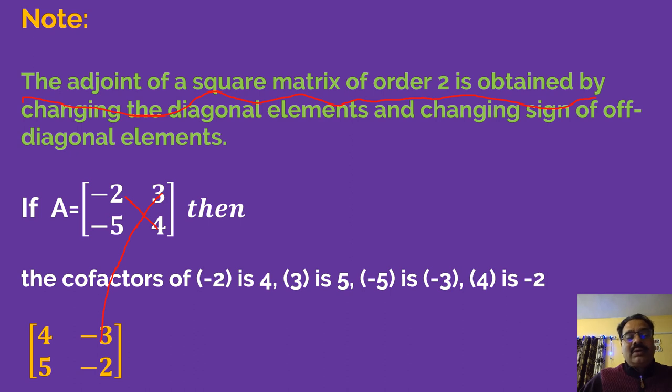If you want to calculate the cofactors one by one: the cofactor of minus 2 is 4, cofactor of 3 is 5, cofactor of minus 5 is minus 3, and cofactor of 4 is minus 2. Then collect the matrix of cofactors and take the transpose. You will get the same result: 4, minus 3, 5, minus 2. So you've learned how to find the adjoint of a square matrix.